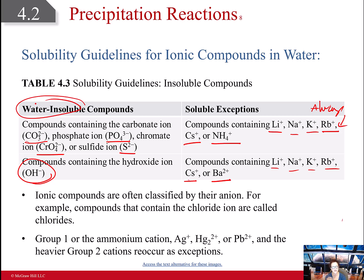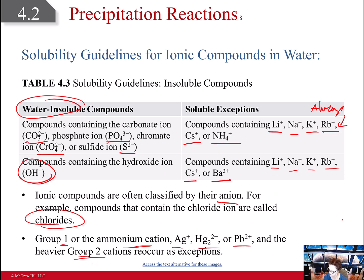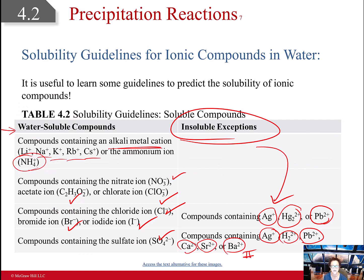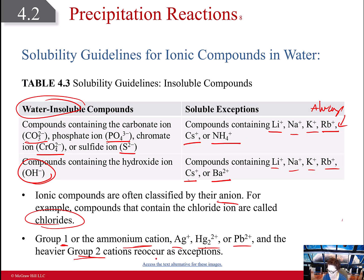We classify these by their anions — so something attached to a chloride ion is called a chloride. Group one (the first column of the periodic table) and the ammonium cation are always soluble. Silver, mercury, and lead, plus the heavy group-two metals — Ba²⁺, Ca²⁺, and Sr²⁺ — are also going to be exceptions. You'll see those over and over again.